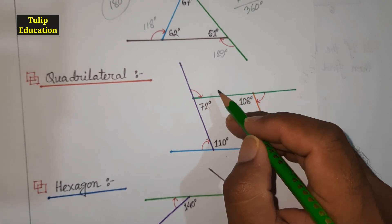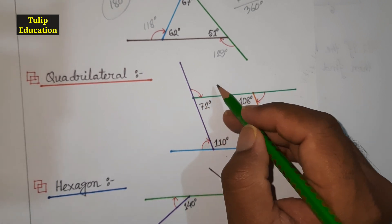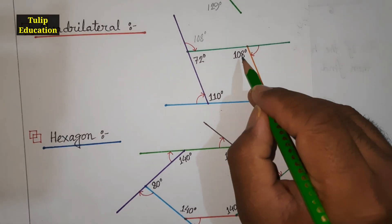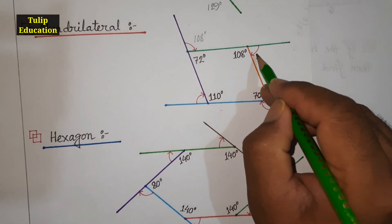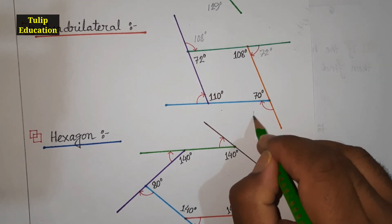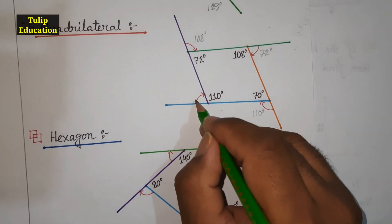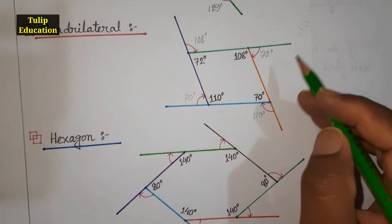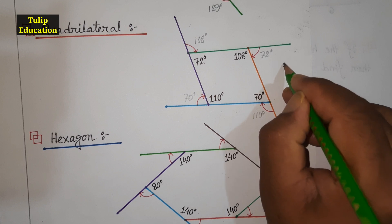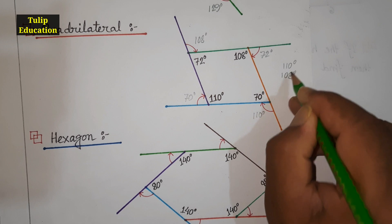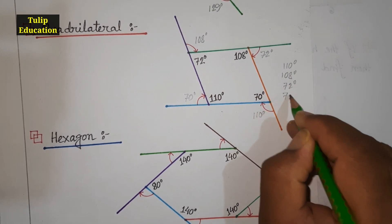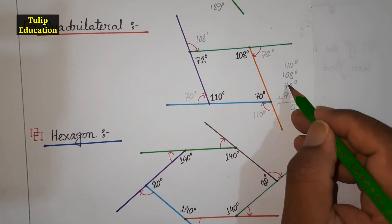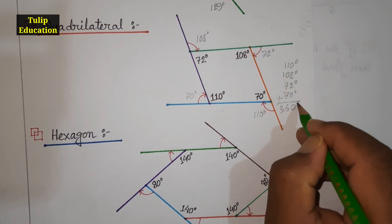To find each exterior angle of the quadrilateral, we subtract each interior angle from 180°. Subtracting 72° gives 108°. Subtracting 108° gives 72°. The next exterior angle is 110°, and the final exterior angle is 70°. Adding these four exterior angles — 110°, 108°, 72°, and 70° — gives a sum of 360°.